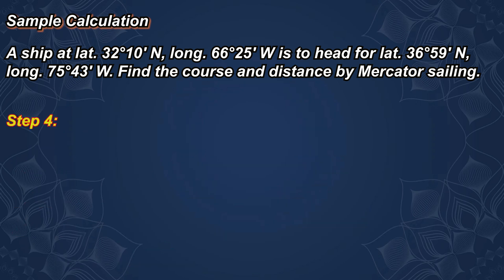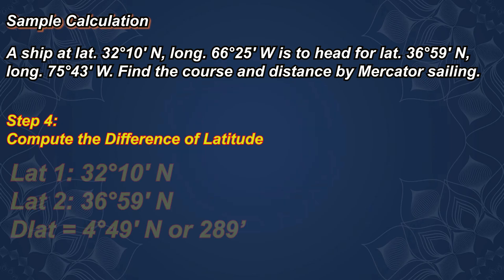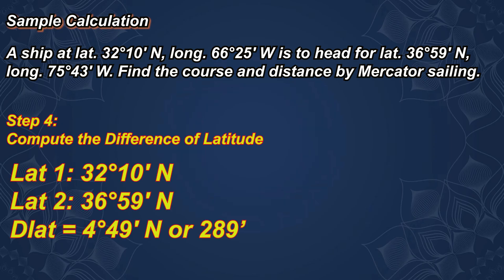Step 4: Compute the difference of latitude. Latitude 1 is 32 degrees 10 minutes north. Latitude 2 is 36 degrees 59 minutes north. The difference of latitude is 4 degrees 49 minutes north, or 289 minutes.